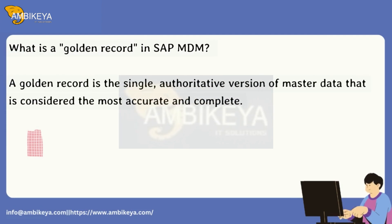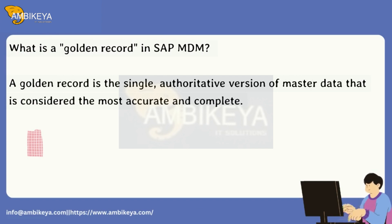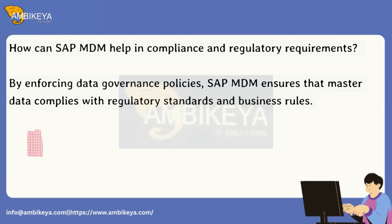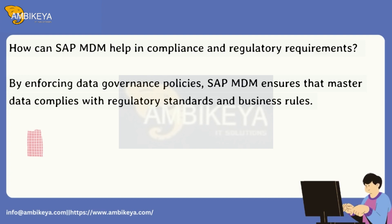What is a golden record in SAP MDM? A golden record is the single, authoritative version of master data that is considered the most accurate and complete. How can SAP MDM help in compliance and regulatory requirements? By enforcing data governance policies, SAP MDM ensures that master data complies with regulatory standards and business rules.